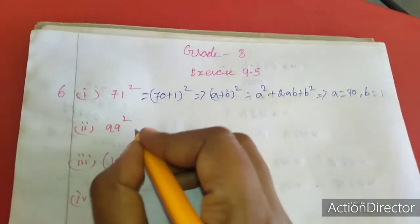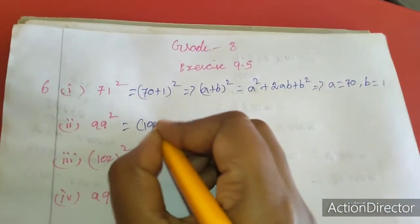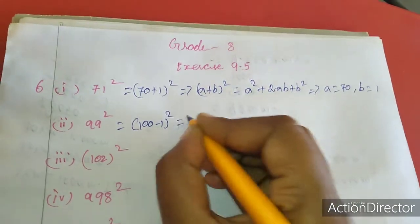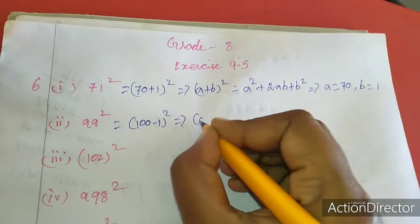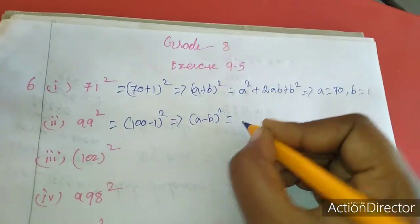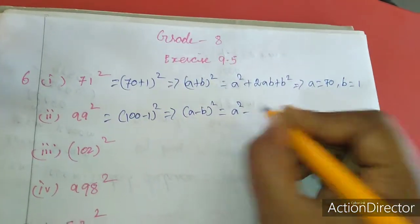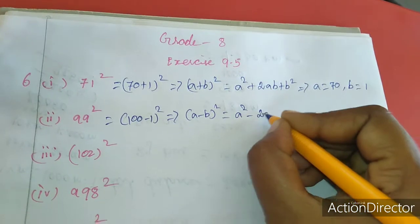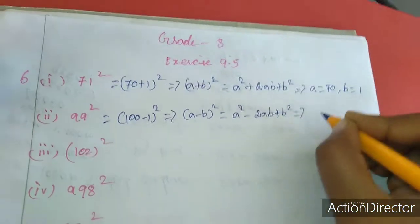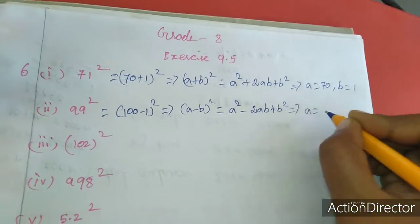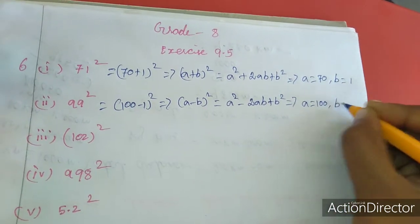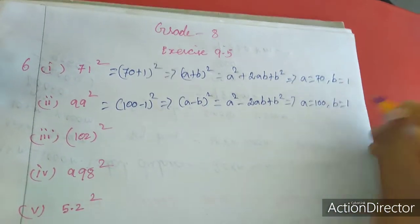The next sum is 99 squared. We write it as 100 minus 1, the whole square. We use the a minus b whole square formula: a squared minus 2ab plus b squared. Here a equals 100 and b equals 1.